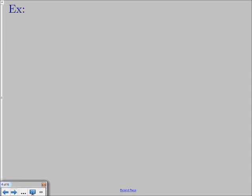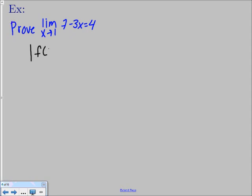You probably don't really care about that unless you understand how to use it to prove limits, which is probably what your homework and tests are asking for. We're going to explore that using example problems. We want to prove that the limit as x approaches 1 of 7 minus 3x is equal to 4. When you do these problems, start with the absolute value of f of x minus l is less than epsilon, and you want to manipulate it algebraically to make it look like the absolute value of x minus c is less than delta.